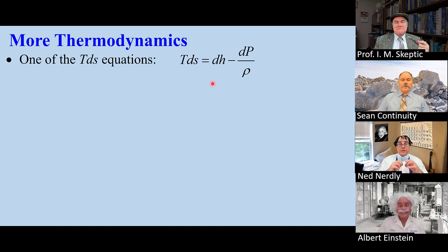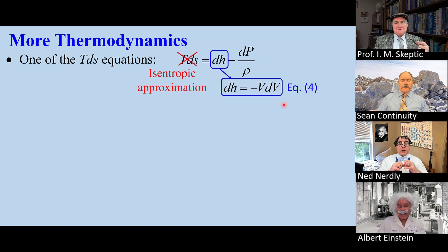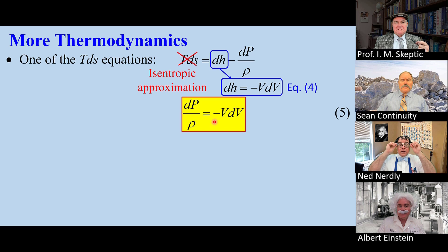Now we apply one of the TdS equations. But this is isentropic, and we apply equation four. We get dP/ρ = -VdV, equation five.